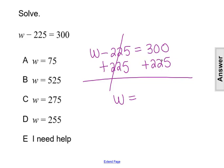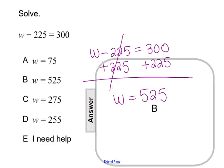And on the right, we have 300 plus 225, which will give me 525. So w equals 525 is our answer because the variable is now completely isolated and alone, making our answer choice B.